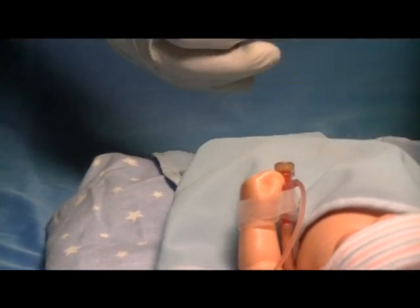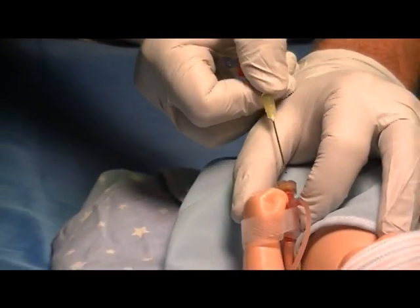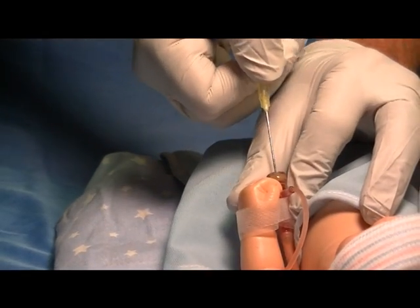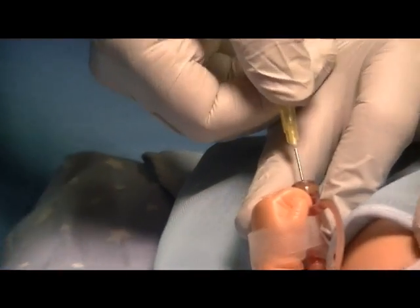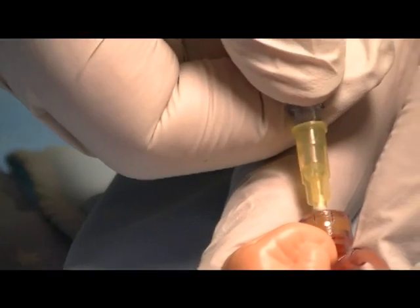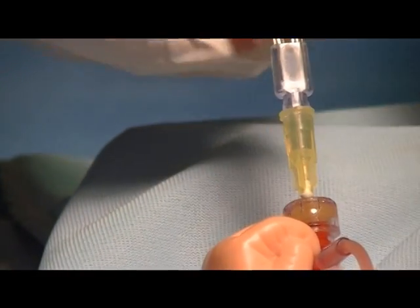You would remove the sterility cover from the Humi and go to the split septum T-connector and insert at a 90 degree angle until it's fully seated inside the catheter hub.